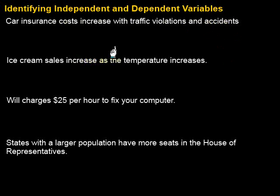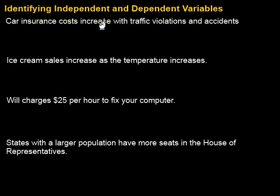Let's take a look at this first one and see if we can figure this out. First of all, we want to come up with what exactly are the things that could change in a situation. The first one says: car insurance costs increase with traffic violations and accidents. So what do we have for variables — what things can change? We have the car insurance costs; those could change.